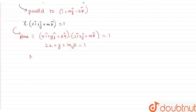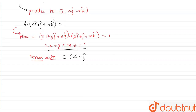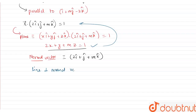From here, the normal vector perpendicular to this given plane is 2i cap plus j cap plus m k cap. Now since the plane is parallel to the given line, the line is perpendicular to the normal vector, so their dot product will be 0.